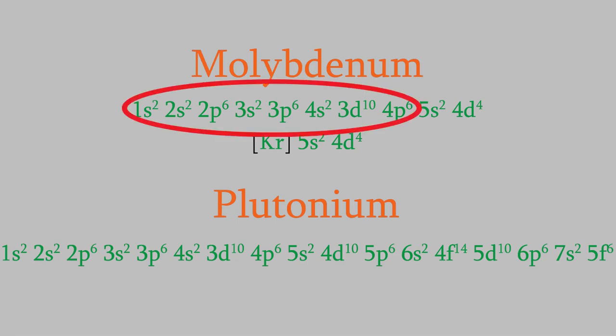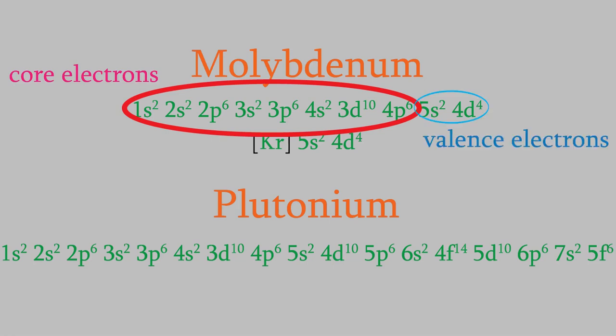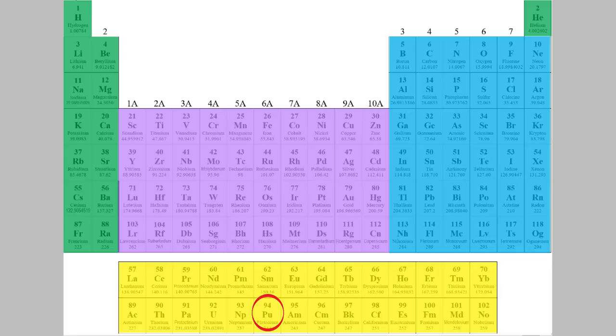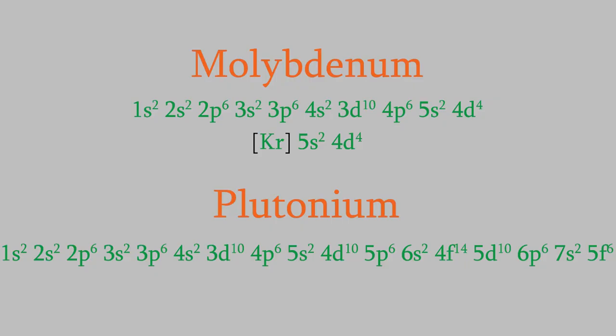All the electrons we replace with the inert gas symbol are called core electrons, and the ones after that are called valence electrons. As we'll see later in this course, it's the valence electrons that do most of the interesting stuff in chemical reactions. The condensed electron configuration for plutonium is an even bigger time-saver. The last inert gas before plutonium is radon, whose configuration ends with 6p⁶. So plutonium's condensed configuration is [Rn] 7s² 5f⁶, meaning the interesting chemistry involves those last 8 valence electrons and the other 86 are core electrons.